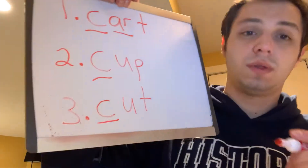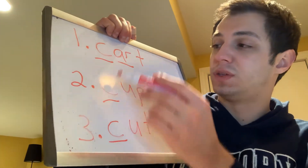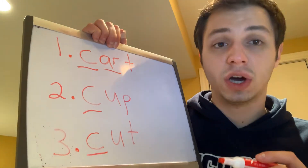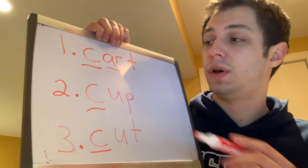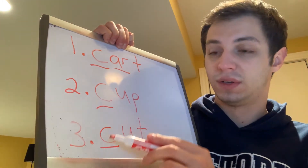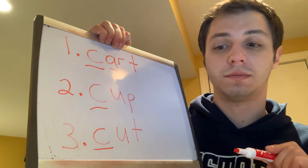And then our last word is going to be the word 'cut.' Get ready? Write the word cut. Let's spell it: C-U-T. Once again, all of these words have the K sound but they're spelled with the letter C. Great job.